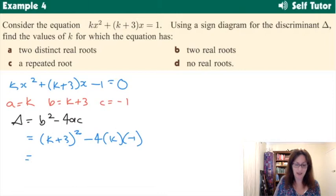Now expanding out that bracket, perfect square, plus 4k, collecting like terms, k squared plus 10k plus 9.